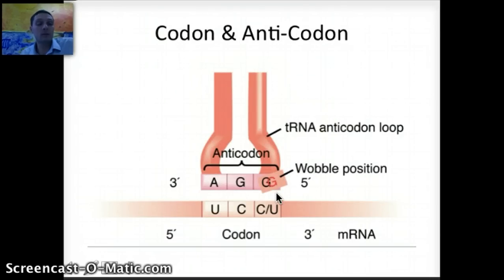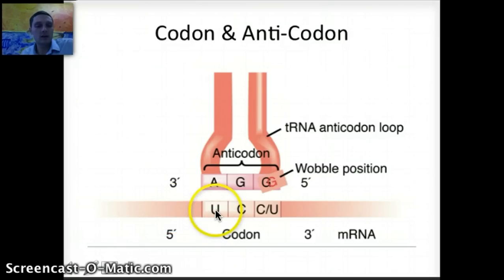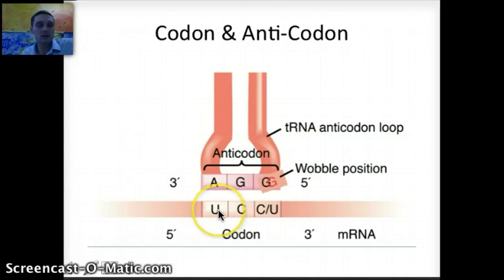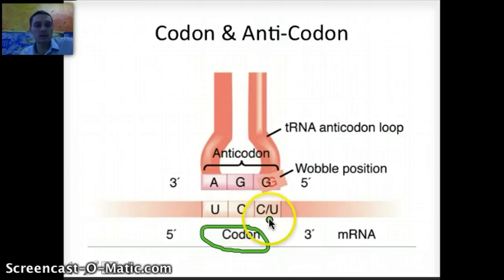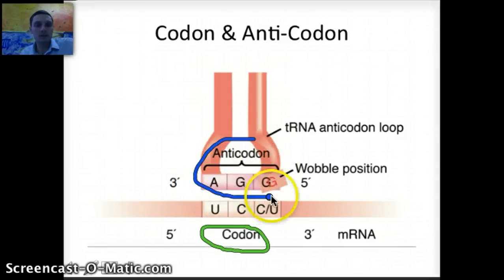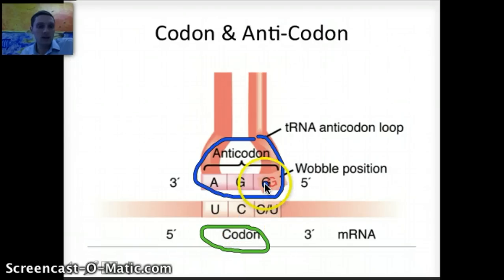On our messenger RNA, we have a series of three nucleotides or nitrogen bases. Three nucleotides on messenger RNA make up something called a codon — simply three nitrogen bases or three different nucleotides. On the tRNA, the corresponding structure is called the anticodon, which matches with or is complementary to the codon. For example, U matches with A, adenine matches with uracil, and guanine matches with cytosine.